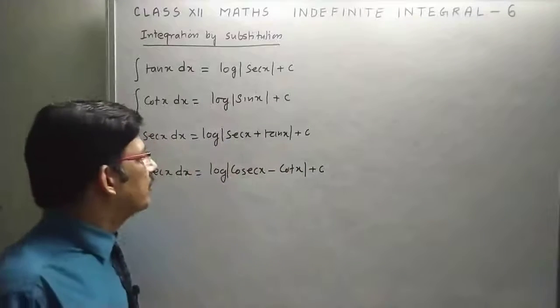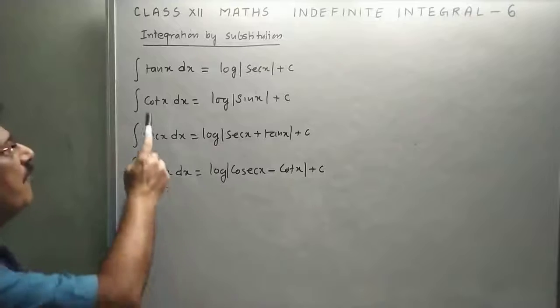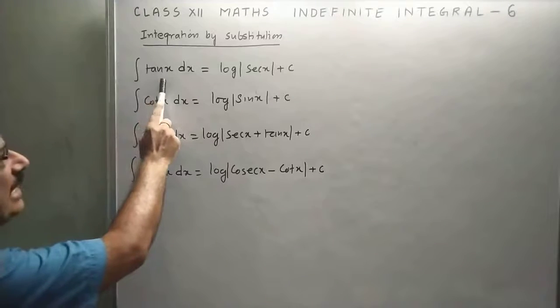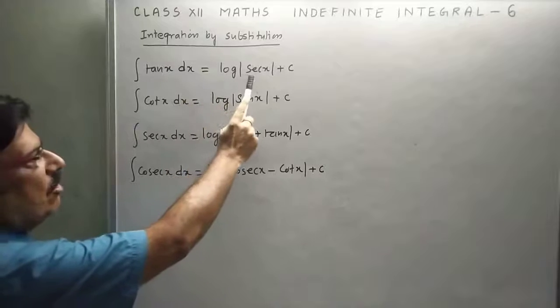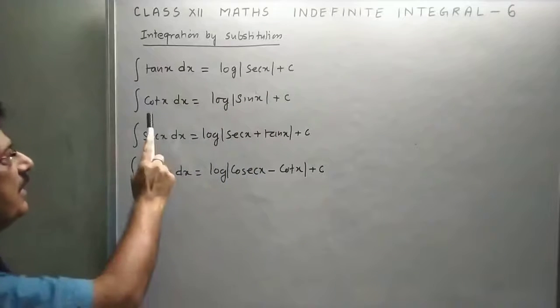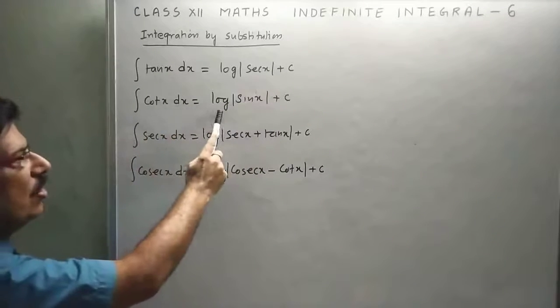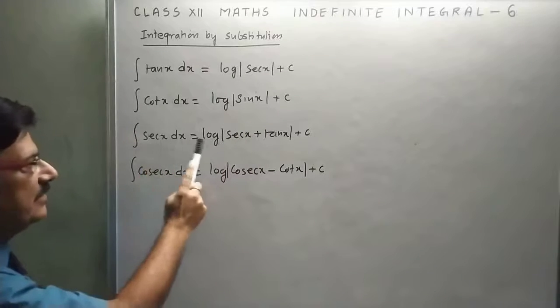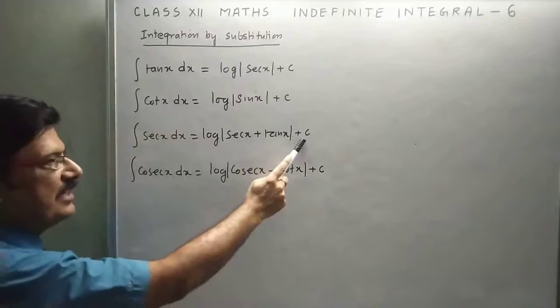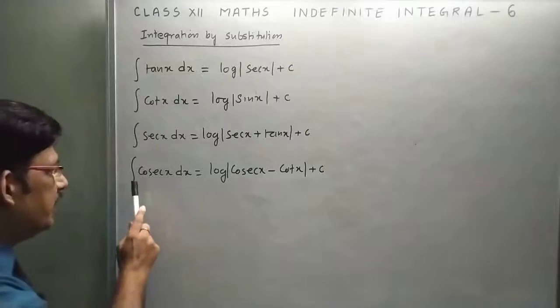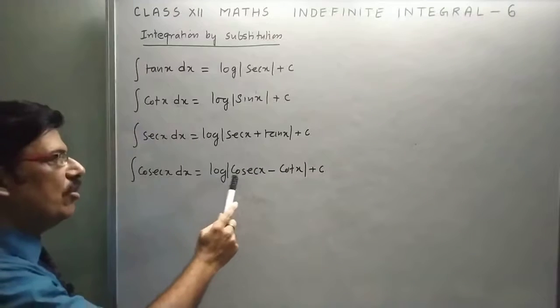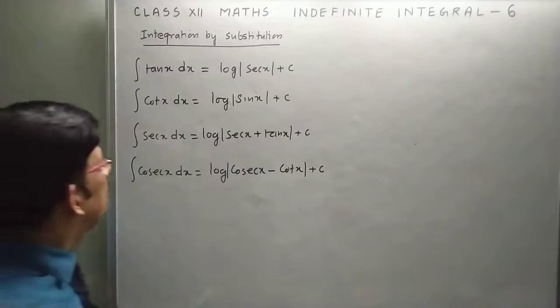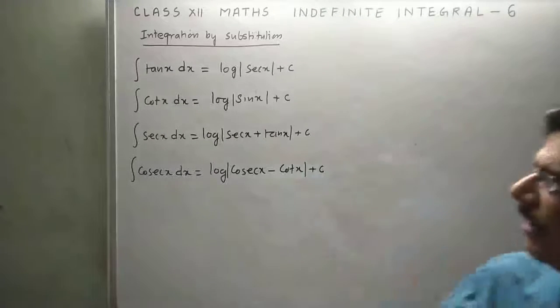In this video, we have four integration formulas. Integration of tan x equals log sec x plus c. Integration of cot x equals log sin x plus c. Integration of sec x equals log of sec x plus tan x plus c. And the last one is integration of cosec x equals log of cosec x minus cot x plus c. Let's take one proof.